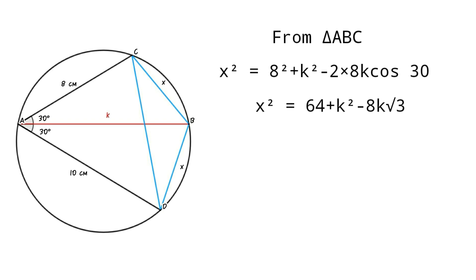Consider triangle ABD. Then X squared equals 10 squared plus K squared minus 2 times 10K cos 30. That is, X squared equals 100 plus K squared minus 10K root 3.